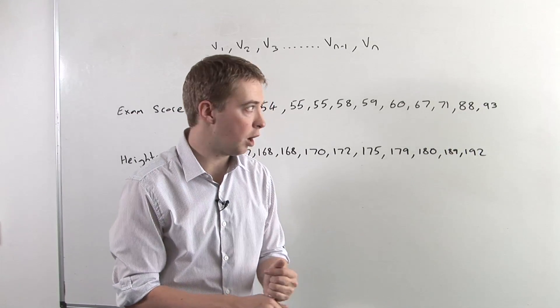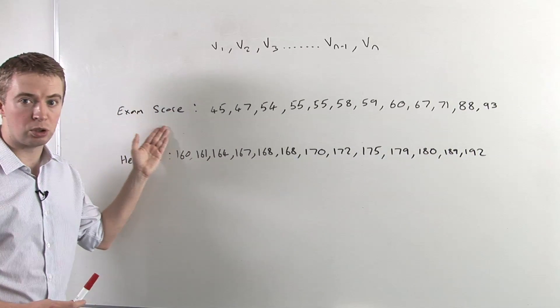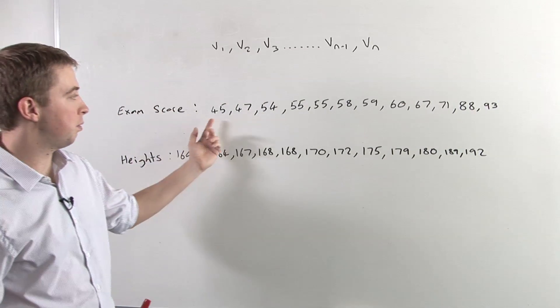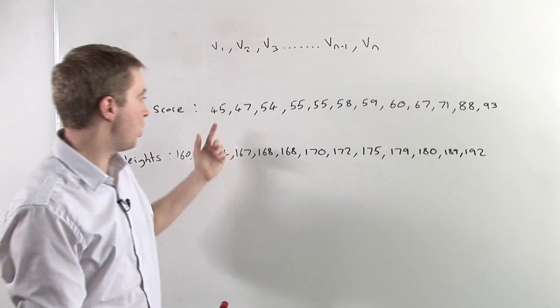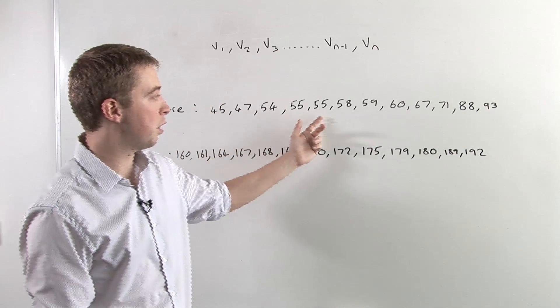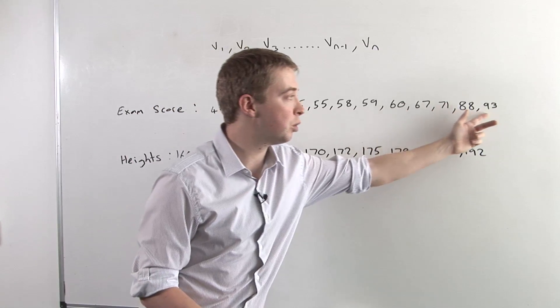If we look at our first example here, which is exam score, we have a series of exam scores. They've already been ordered, and we have 1, 2, 3, 4, 5, 6, 7, 8, 9, 10, 11, 12.